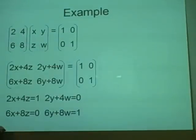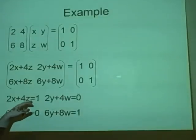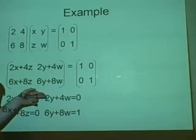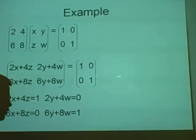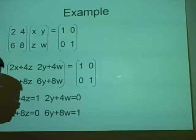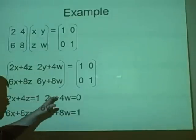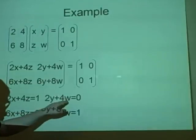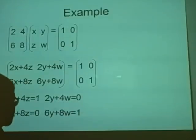If X is minus 1, then 2 times minus 1 is minus 2. Moving that over gives 4Z equals 3, so Z equals 3 over 4. Over here, doing the same — multiplying and subtracting — gives 2Y equals 1, so Y equals a half. If Y is a half we get 1 minus 1, so 4W equals minus 1, giving W equals minus a quarter.